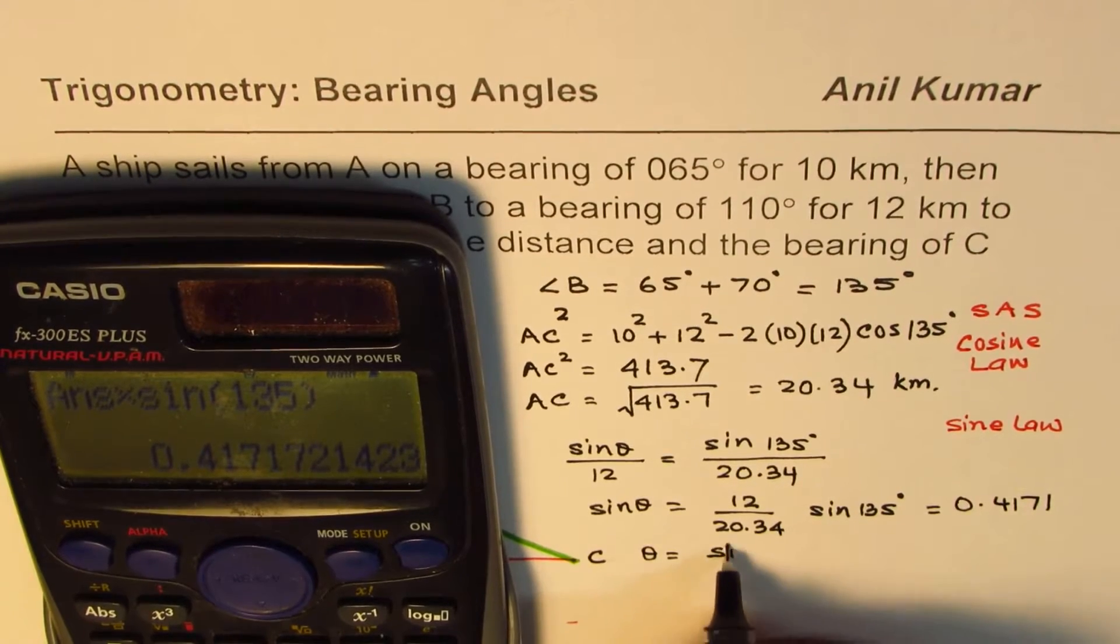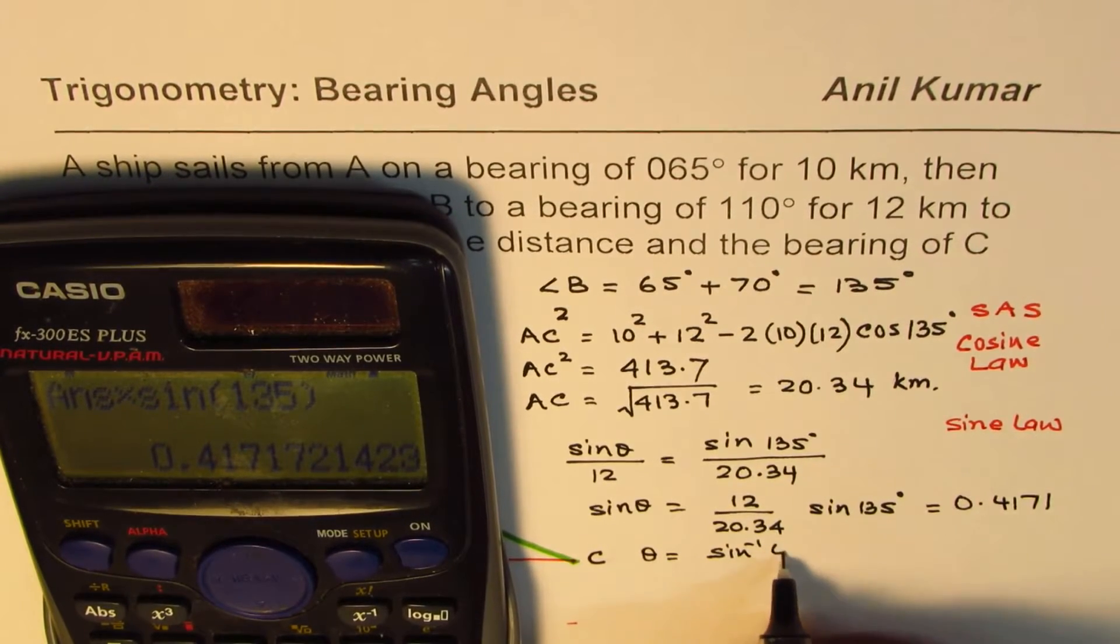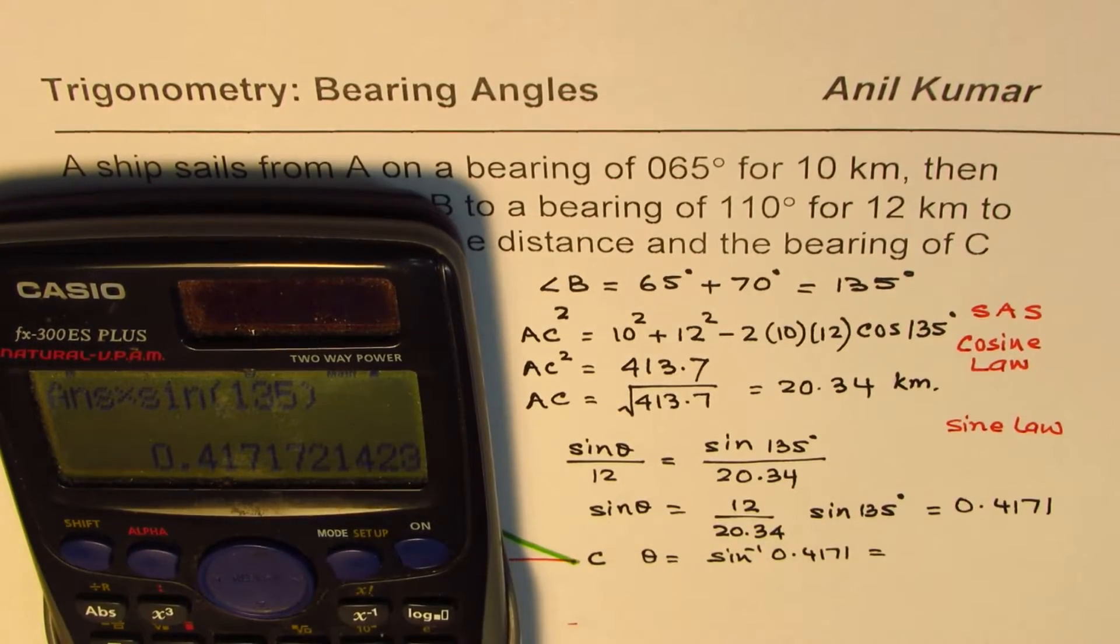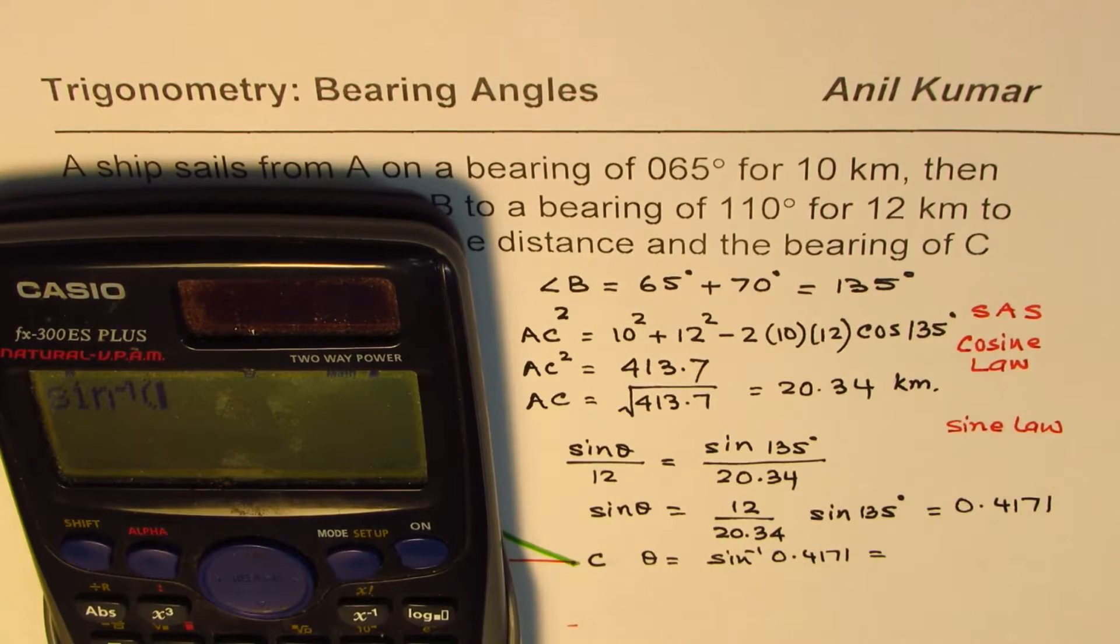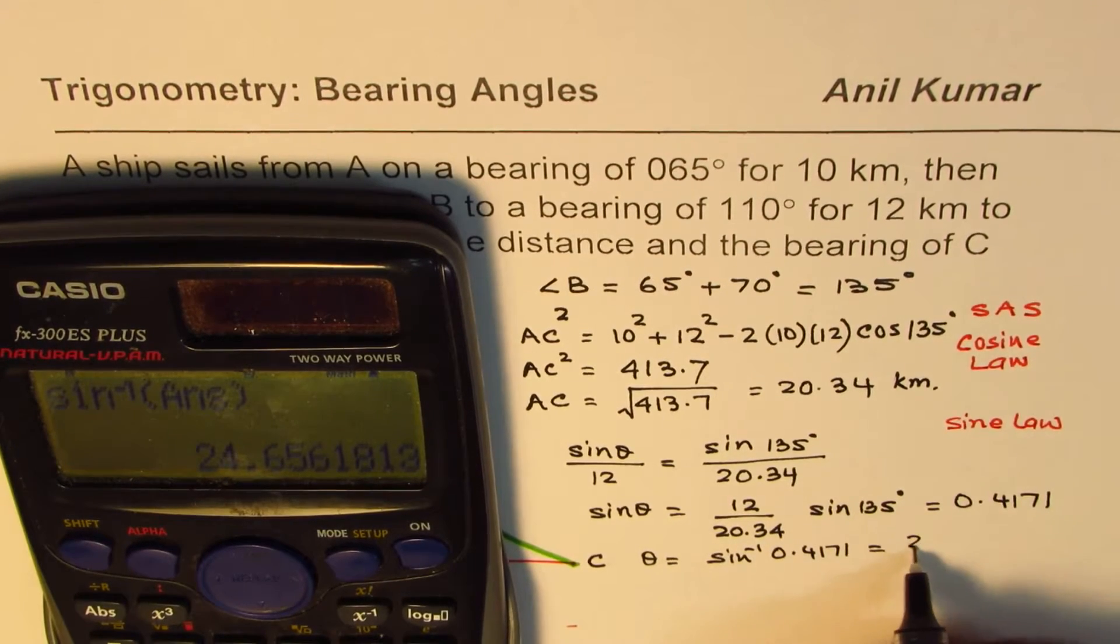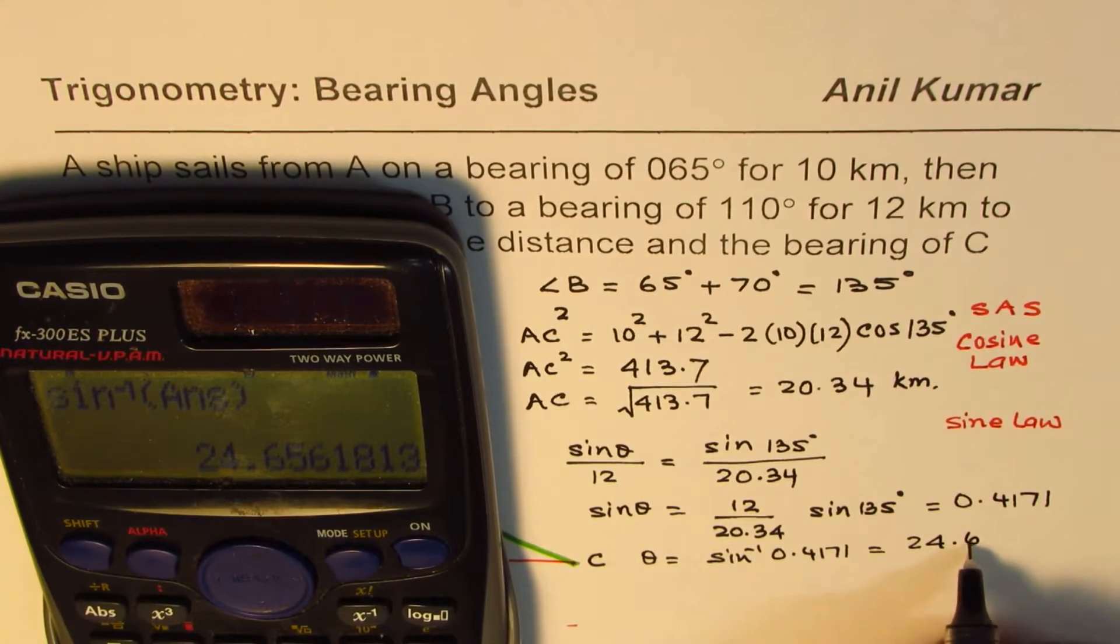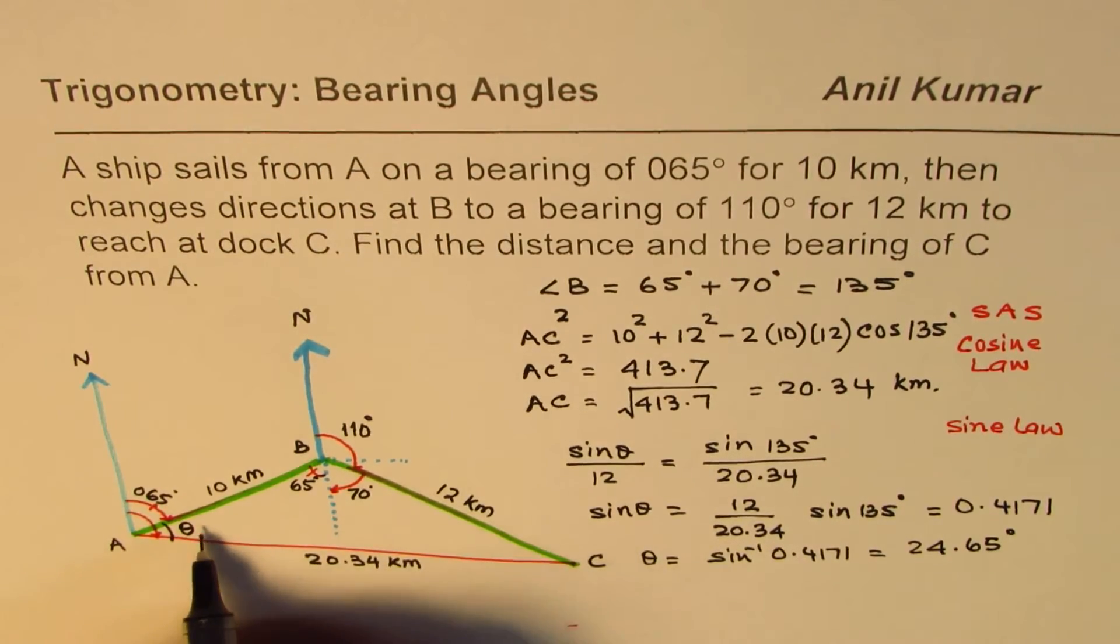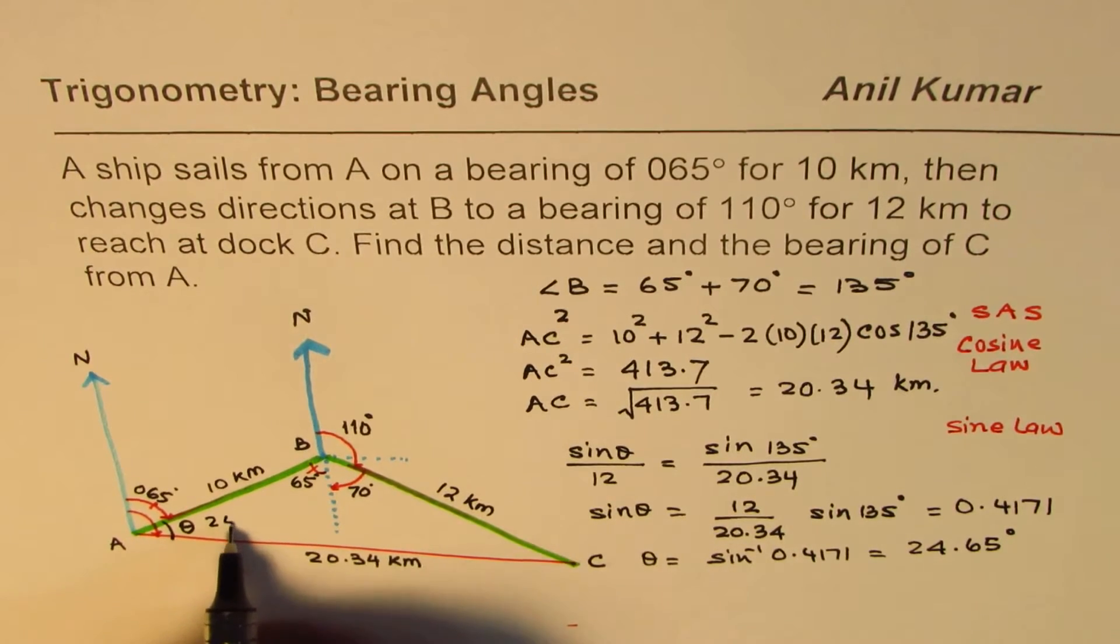So what is theta equals to? Theta is sine inverse of 0.4171. Let's calculate. So we have shift sine inverse of the answer. So that is equal to, we get angle which is 24.65 degrees. So that is the angle theta. So theta for us is 24.65.